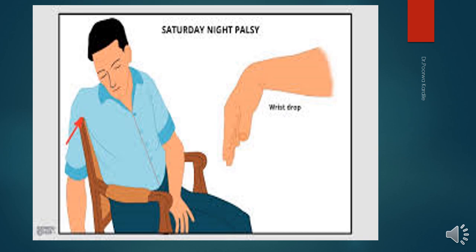Sensory losses are present over the posterior surface of the lower part of the arm, a narrow strip over the back of the forearm, and over the dorsum of the first, second, and third metacarpals and corresponding proximal and middle phalanges. Triceps and supinator reflexes are also lost. In brief, Saturday night palsy is a lesion of the radial nerve at the axilla affecting extensors of the arm and forearm, resulting in wrist drop.